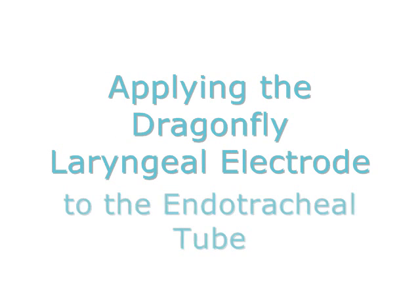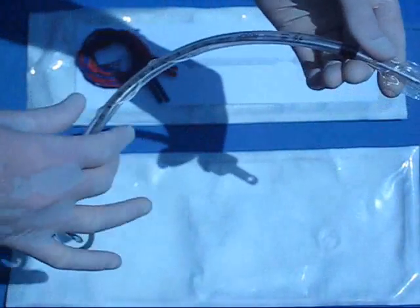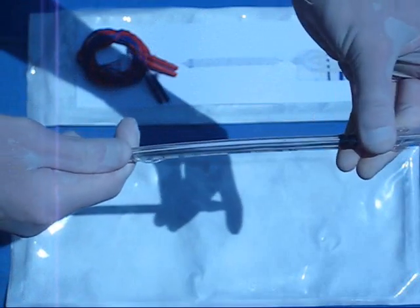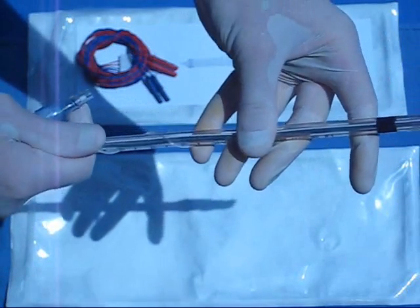Applying the Dragonfly laryngeal surface electrode. To begin, choose any non-silicon ET tube free of lubricants or other materials that may inhibit electrode adhesion. Use a stylet to straighten the ET tube and set it aside.